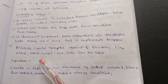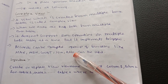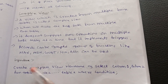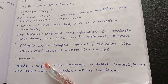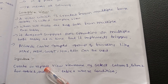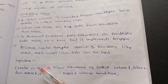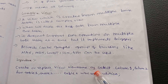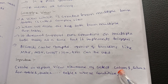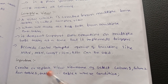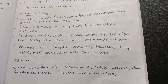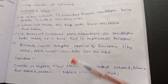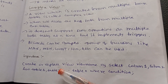Grouped functions include MAX, MIN, COUNT, SUM, AVERAGE. The syntax is: CREATE OR REPLACE VIEW view_name AS SELECT column1, column2 FROM table1, table2, table3 WHERE condition.